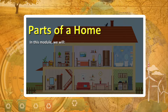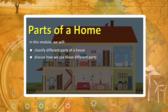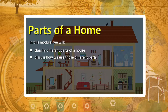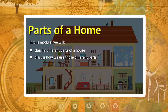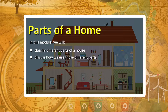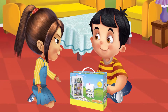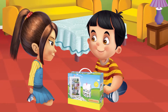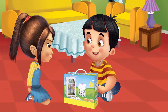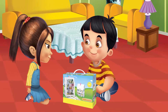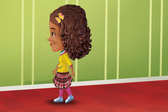In this module, we will classify different parts of a house and discuss how we use those different parts. Sid and Alicia got a doll's house puzzle set as a present from their uncle. They wanted to play with it, so they invited their friend Sophie to play with them.